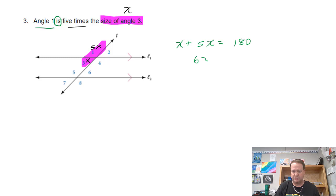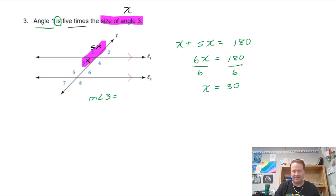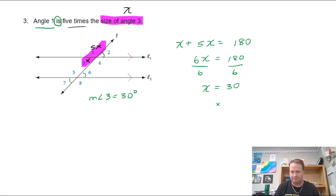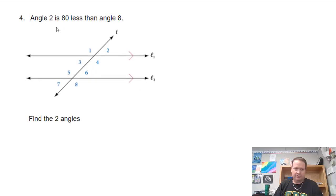Combining terms gives 6x equals 180. Dividing both sides by 6, x equals 30. So the measure of angle three is 30 degrees, and angles two, six, and seven are also 30 degrees. Angle one is 5x, so 5 times 30 is 150 degrees. Angles one, four, five, and eight are all 150 degrees.